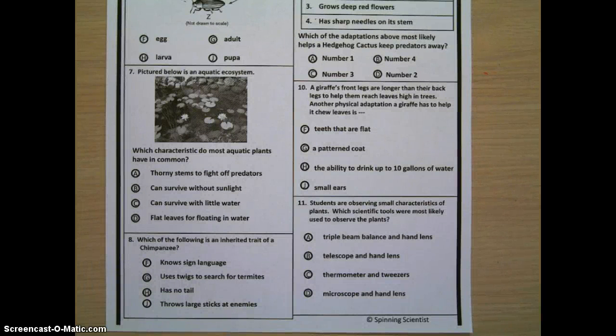Eight, which of the following is an inherited trait of a chimpanzee? F, knows sign language. G, uses twigs to search for termites. H, has no tail. J, throws large sticks at enemies.